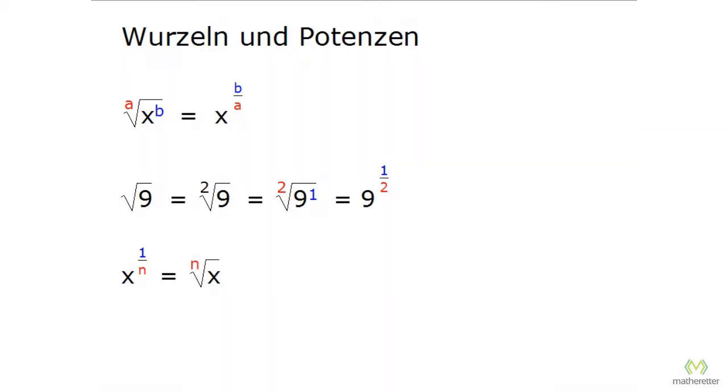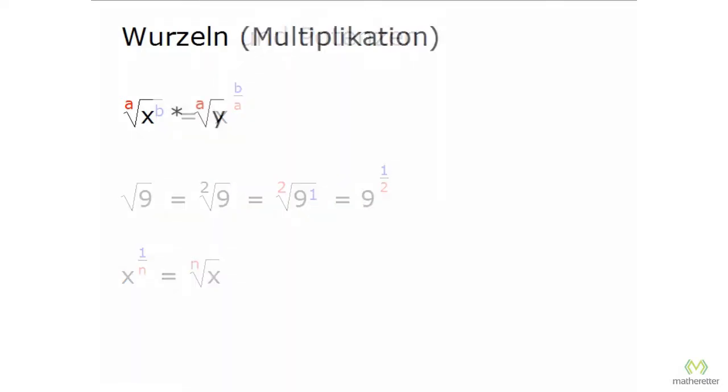Let's continue with the multiplication of roots. If you have the ath root of x times the ath root of y, that equals the ath root of x times y. You are allowed to pull the root out on both factors. Why is that? To prove this, we convert the two roots into powers.